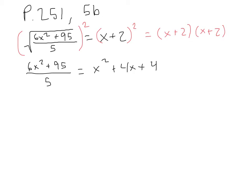And now to get rid of the fraction on the left, we want to multiply both sides by 5. The 5s will cancel on the left, and it'll leave us with 6x squared plus 95 equals, distribute the 5 on the right, 5x squared plus 20x plus 20.